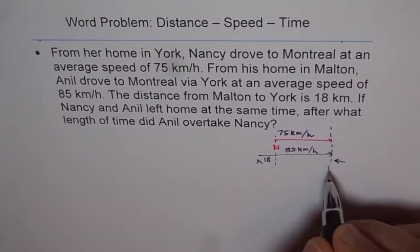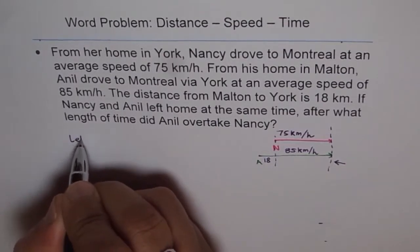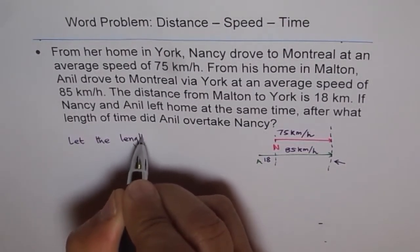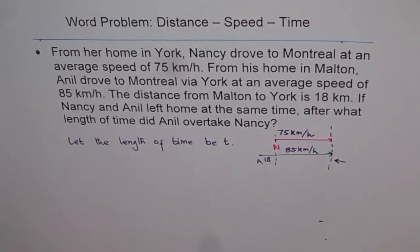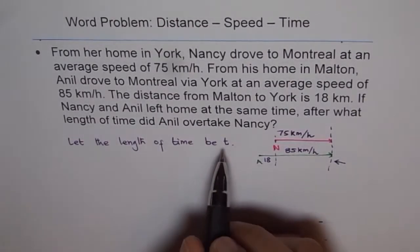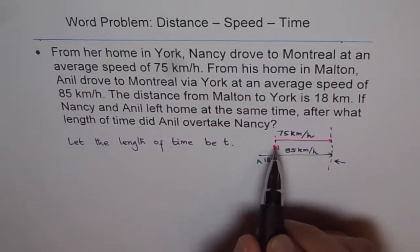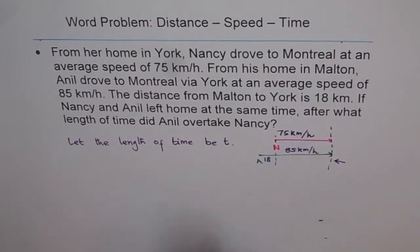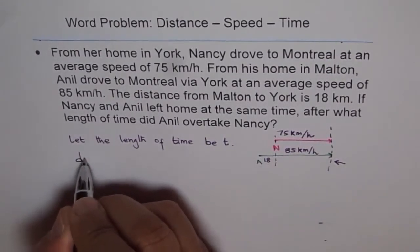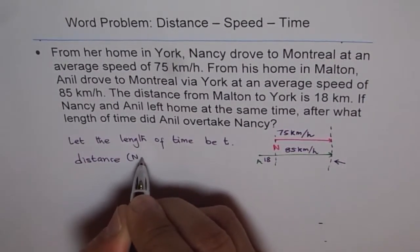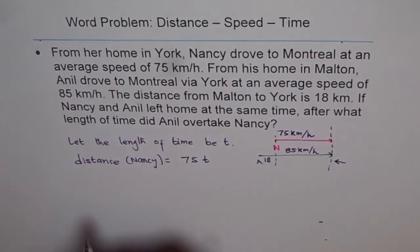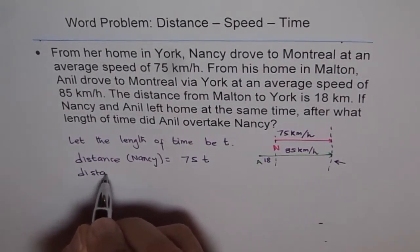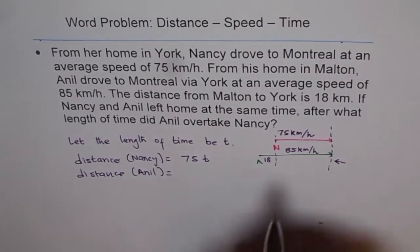The equation is formed by equating the time for both of them. Since the time is the same, let the length of time be T, which is the same for both since they started at the same time. In time T, Nancy is traveling at 75 kmph, so the distance covered by Nancy is 75T. And the distance covered by Anil is 85T.